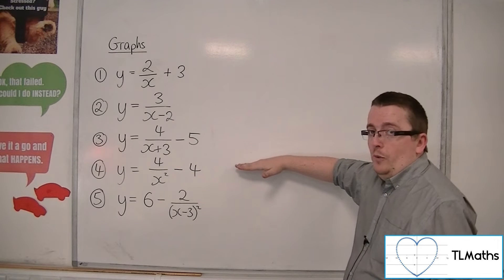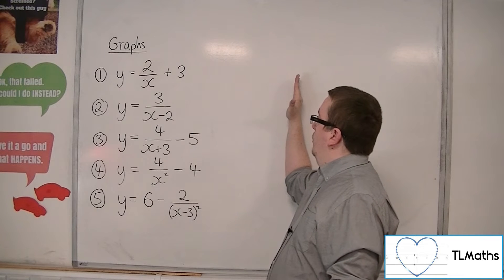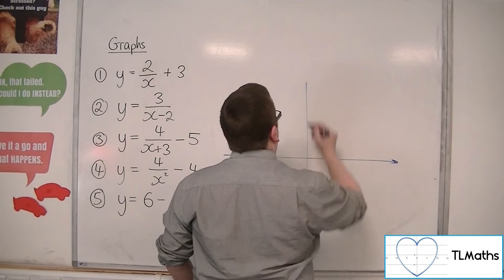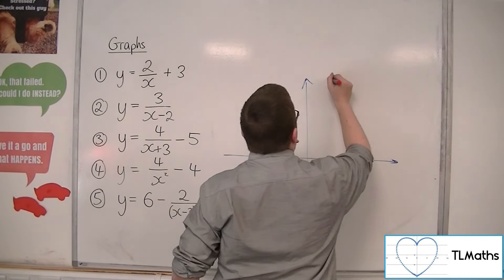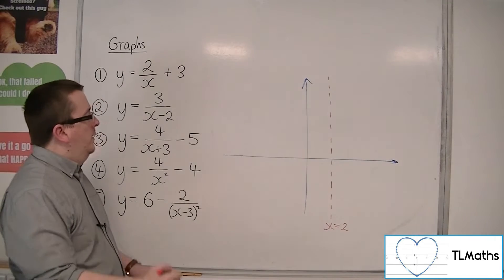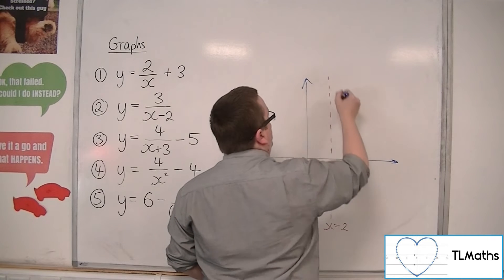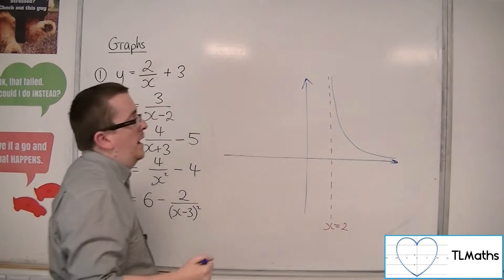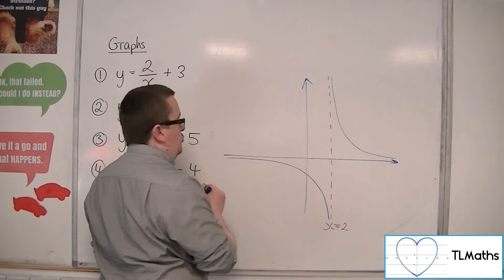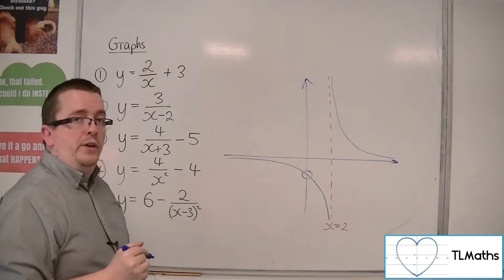The horizontal asymptote just moves to the right and remains horizontal. The vertical asymptote at the y-axis moves 2 to the right, so we draw that in at x equals 2. The curve approaches x equals 2 on both sides and approaches the x-axis, so at some point this curve must cross the y-axis.